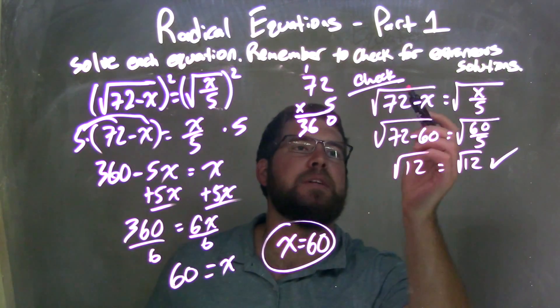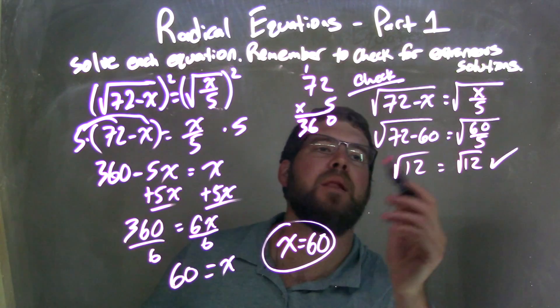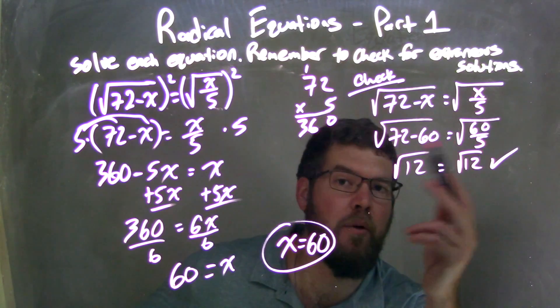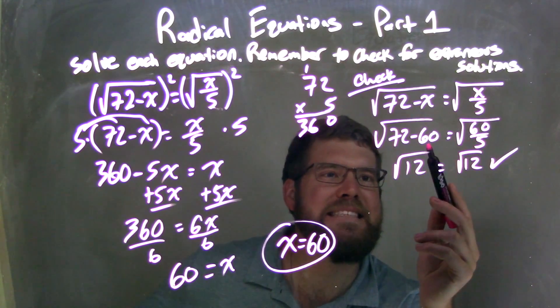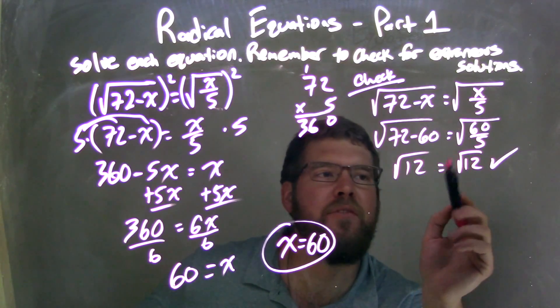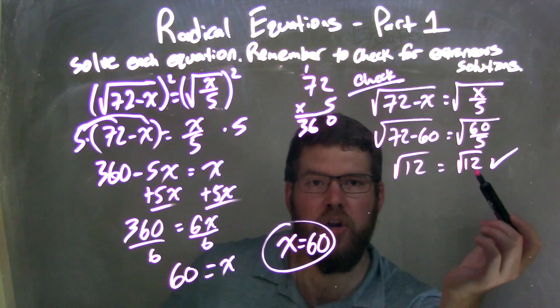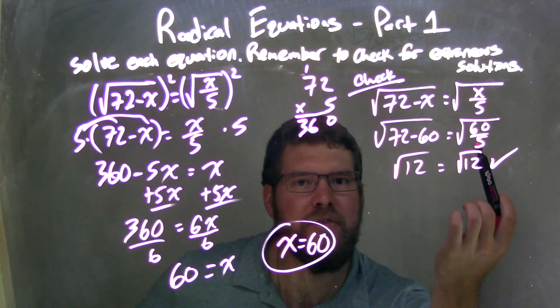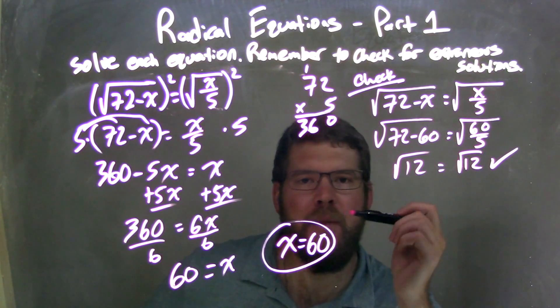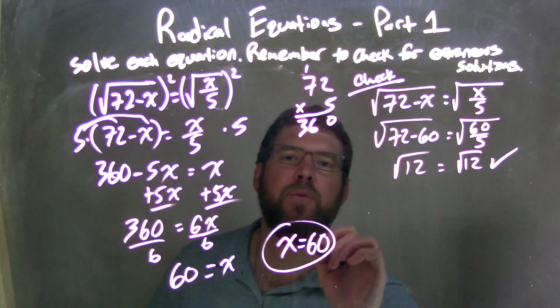But let's check it. So we check it here, rewrote the equation, and plug 60 in for x's, or both x's, right? 72 minus 60 is 12. 60 divided by 5 is 12. Square root of 12, square root of 12. Fantastic. They are equal. So we're good. We have no extraneous solutions, right? And I can confirm that my final answer is x equals 60.